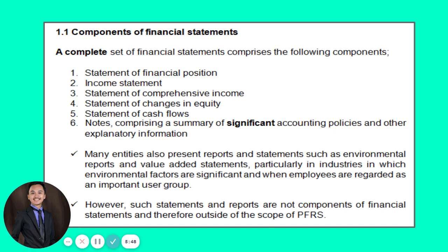The statement of changes in equity reports to stakeholders the reasons for changes in the equity of a corporation — the reasons behind increases or decreases in total equity. Number five is the statement of cash flows, which reports a summary of disbursements and receipts of cash in a particular period. Number six is the notes to financial statements, which comprises a summary of significant accounting policies and other explanatory information, including all material items not reported in the other components.